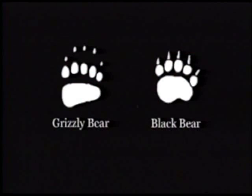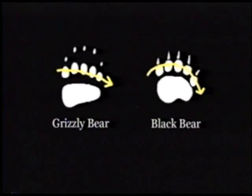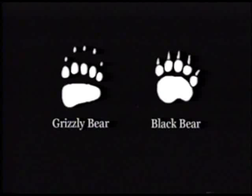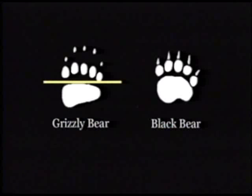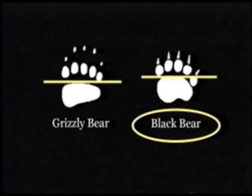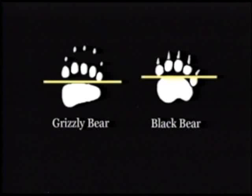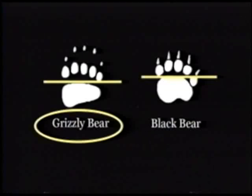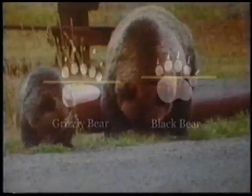The toes on black bears are in a noticeable arc, while the grizzly's run in an almost straight line. One of the best ways to distinguish black bear prints from grizzly bear prints is to run a straight line from under one outside toe across, touching the front of the pad, and seeing where it intercepts the opposite outside toe. If the line crosses above the center of the outer toe, the footprint belongs to a black bear. If it crosses the lower half of the outer toe, the footprint was likely made by a grizzly bear.